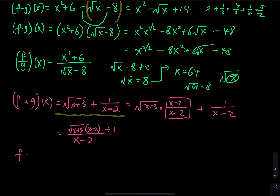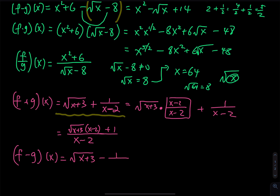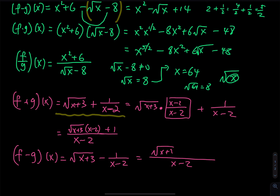For f minus g of x, that is equal to the square root of x plus three minus one over x minus two. If you put this into one term over x minus two, the numerator becomes x minus two times the square root of x plus three, and then the plus one becomes a minus one.